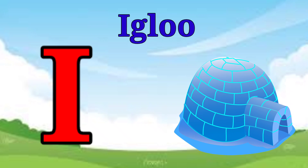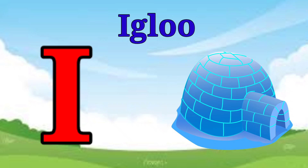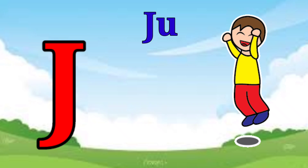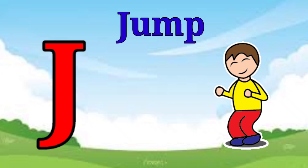I is for igloo, i-i-igloo. J is for jump, j-j-jump.